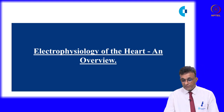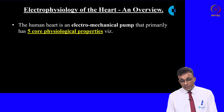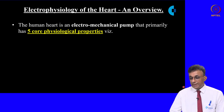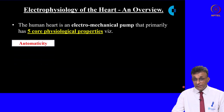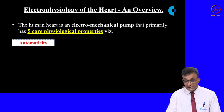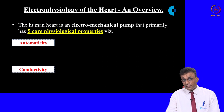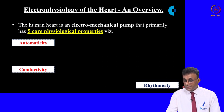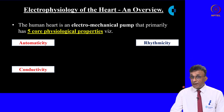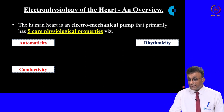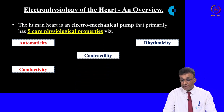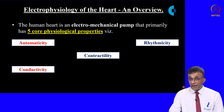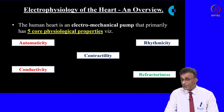We shall have a recap on the electrophysiology of the heart. The human heart is an electro-mechanical pump that primarily has five core physiological properties. Automaticity is the ability of the heart to spontaneously generate an impulse. Conductivity is the ability of the heart to transmit this impulse throughout the conducting system. Rhythmicity ensures the impulse is conducted in a regularly regular fashion. Contractivity is the actin-myosin interaction within the cardiac myocyte, allowing the heart to contract as a syncytium.